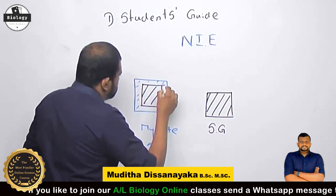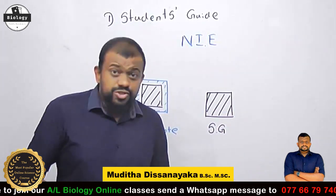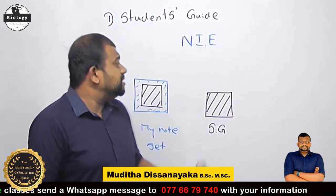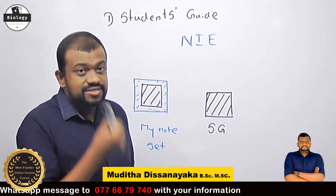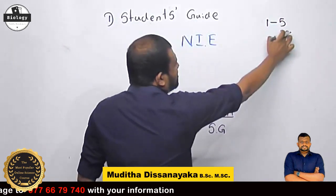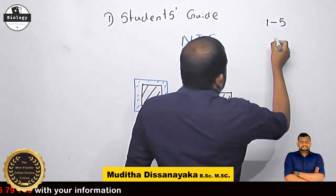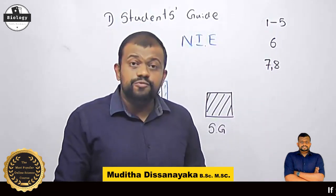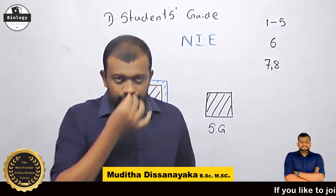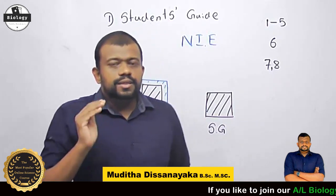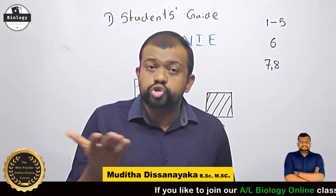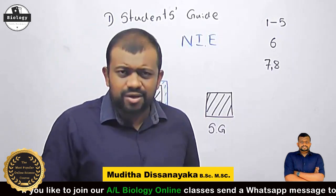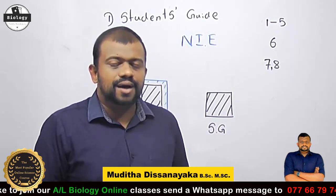So, is the Student's Guide essential? It is not available as one single book — it is in several chapters. Lessons one to five are in one book, the sixth lesson is separately given, and likewise it is in several books. I am going to give you several download links. They are available as PDF books. This is also available to be purchased in bookshops and at the National Institute of Education, Education Publication Department outlets. The current price is 2,000 rupees.